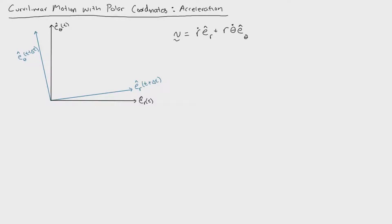In the last video, we proved that the velocity vector can be written as r_dot times the unit vector e_r plus r times theta_dot times the unit vector e_theta.